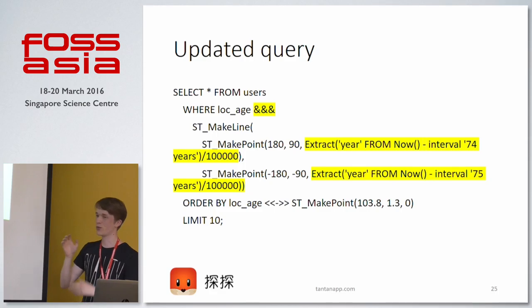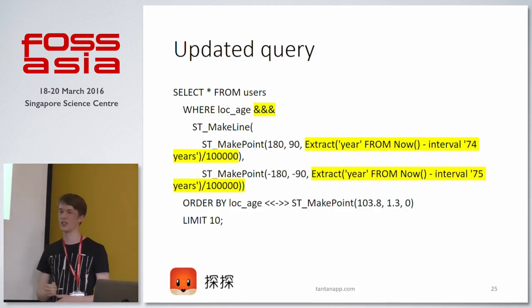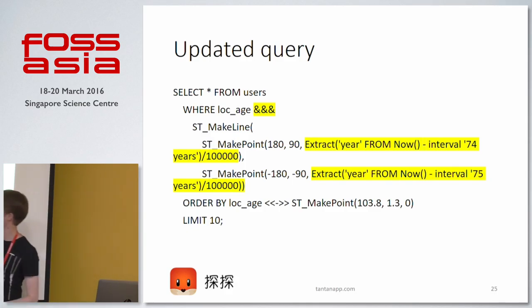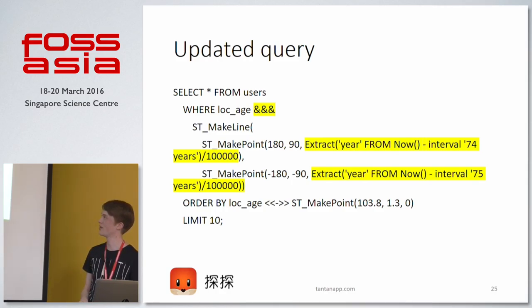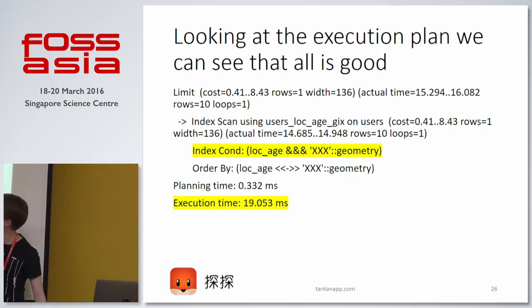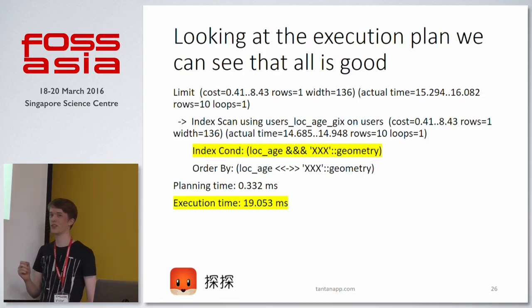The query looks like this: we select from users and the interesting part is WHERE location_age is within this bounding box using the &&& operator. The bounding box includes every possible x and y value — x from -180 to 180, y from -90 to 90 — but for the birth year we only include those 74 and 75 year olds, using the same scaling factor. Then of course we use the same 4D ordering.